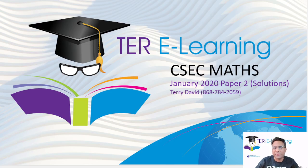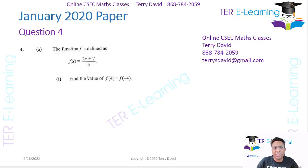Hi guys, Terry here again. So this is question 4, question 4 of the January 2020 paper. Question 4, they give us a function here, and the function is 2x plus 7 divided by 5, and they want f of 4 plus f of minus 4.